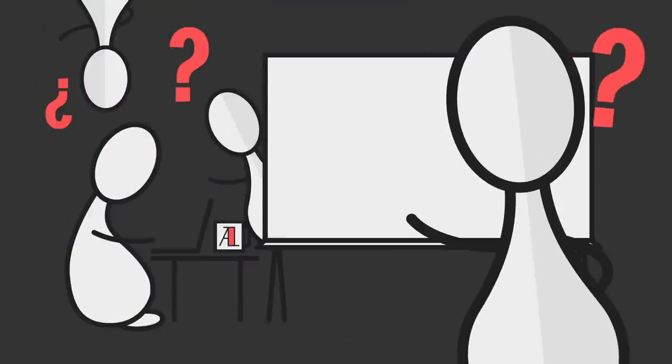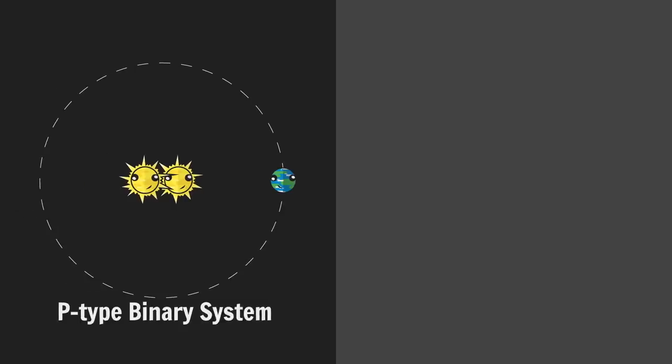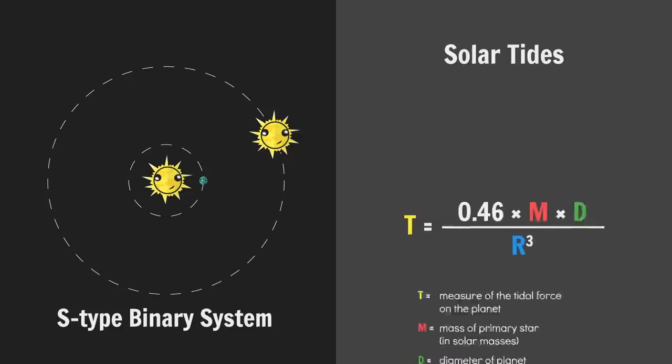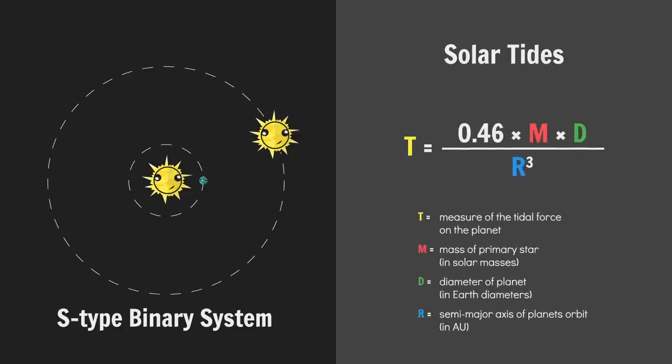But Edgar, what about multiple star systems? If you have a P-type system, use this fella from earlier and simply combine your stellar masses. For S-type systems, ignore the secondary star. Given its distance, its tidal effects will be negligible. Again, the spreadsheet has multi-moon and multi-star systems covered.